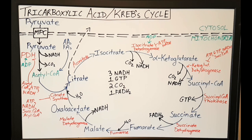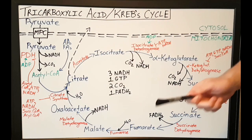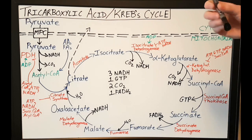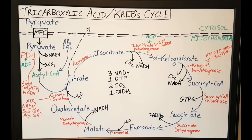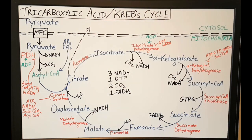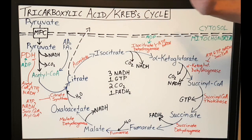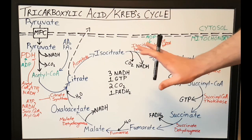PDH is actually a highly regulated enzyme complex. It is negatively regulated by acetyl-CoA, ATP, and NADH, which signify that the cell is energy sufficient, but it's activated by ADP, indicating that the cell would be energy deficient. So PDH, the pyruvate dehydrogenase complex, converts pyruvate into acetyl-CoA.